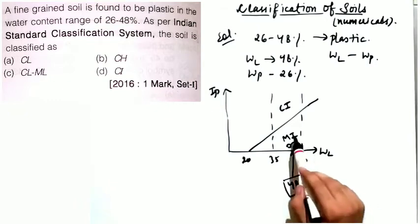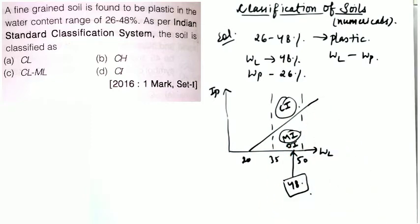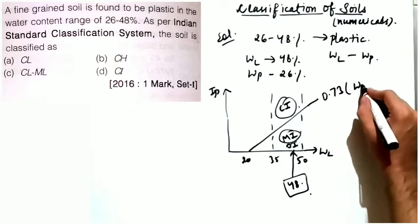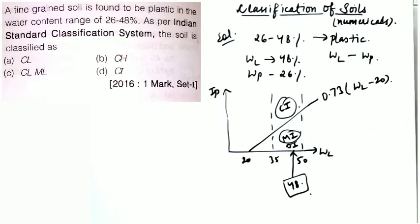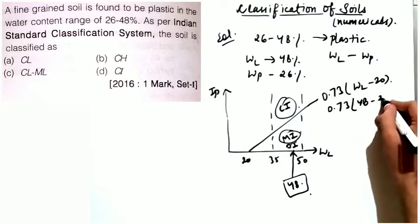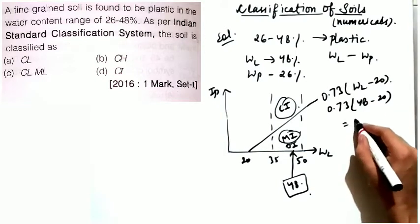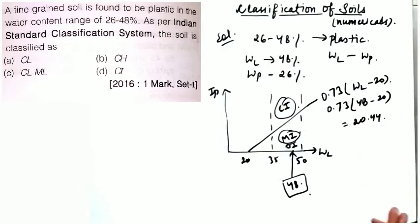Since the liquid limit is 48%, the soil will be either MI or CI. To decide, check the plasticity index. The equation of the A-line is IP = 0.73 × (WL − 20). With WL = 48%, the A-line IP = 0.73 × (48 − 20) = 20.44%.